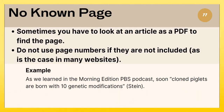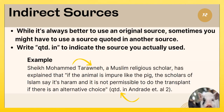When there is no known page, sometimes you have to look at an article as a PDF to find the page. Do not use page numbers if they are not included, as is the case in many websites. In this example, we just see the author's last name because there is no known page number.